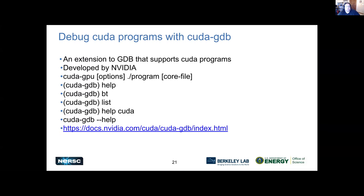The next tool is CUDA-GDB — the CUDA extension for the GNU Debugger. This is an NVIDIA tool that's basically an extension to GDB supporting CUDA programs. You can use it just like regular GDB, except it has CUDA-specific options. Just type 'help cuda' to get more information on what to do. However, it doesn't support other programming models like MPI or OpenMP right now — it's CUDA-specific.